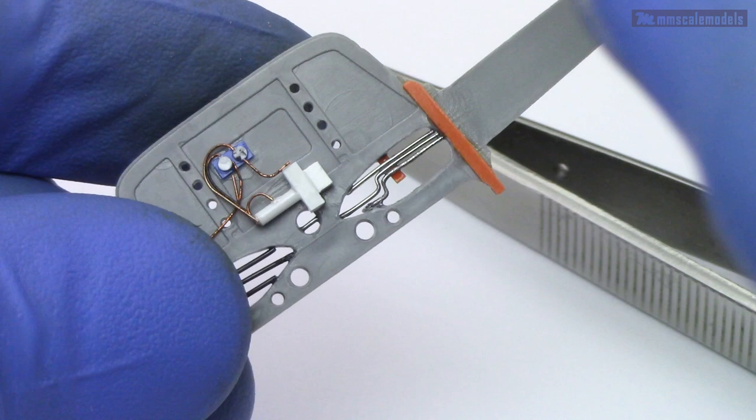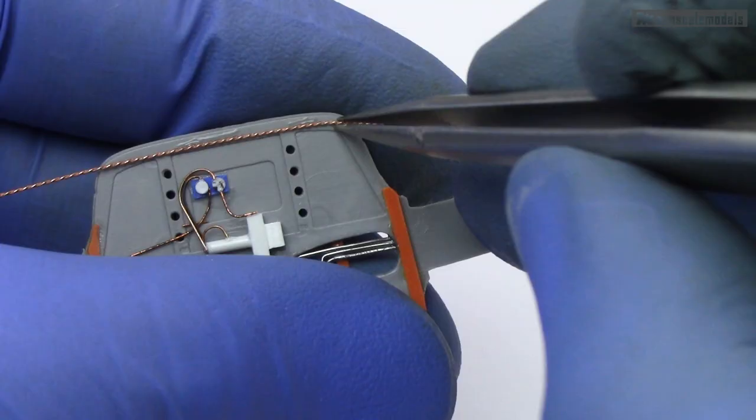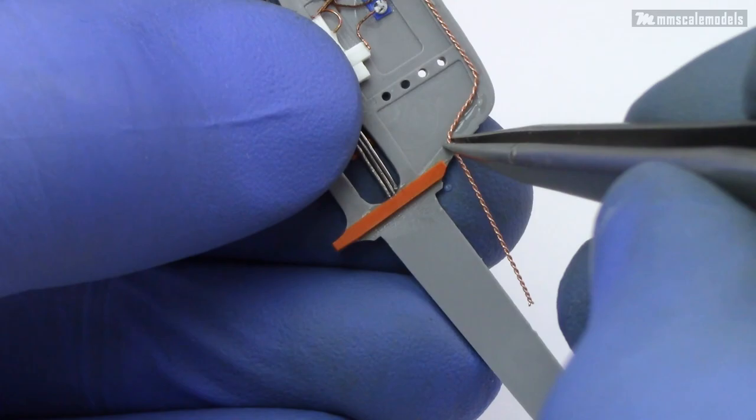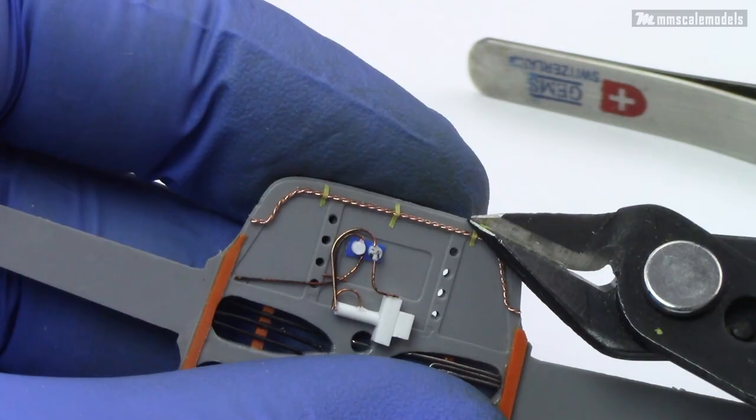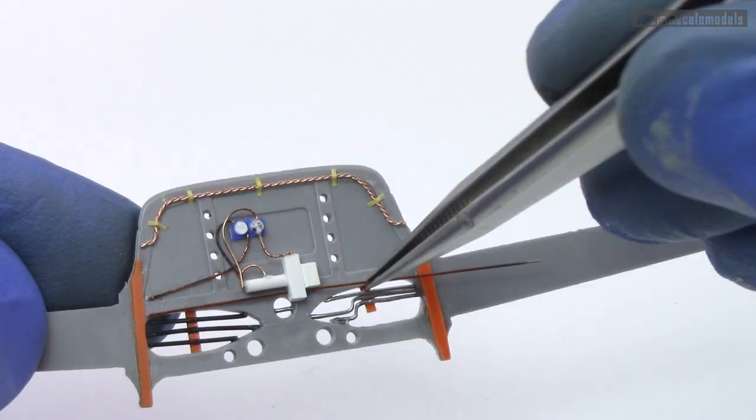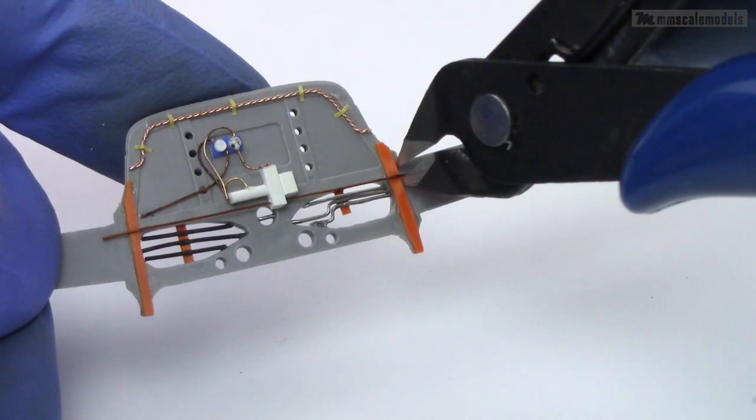To finish off this area I added the mandatory twisted copper strands wire loom. And to enrich the situation I added thin strips of masking tape to simulate the cable ties. After all I doubt this wire loom was glued on right?